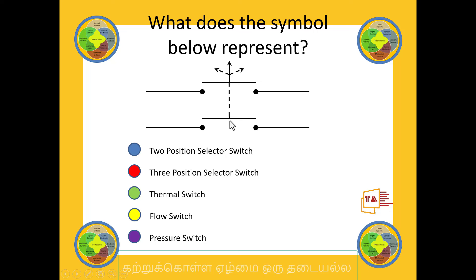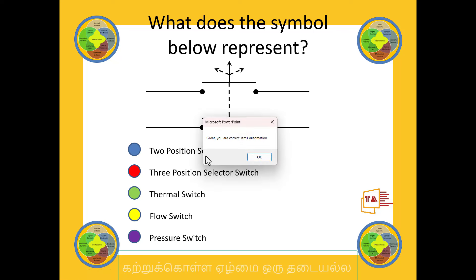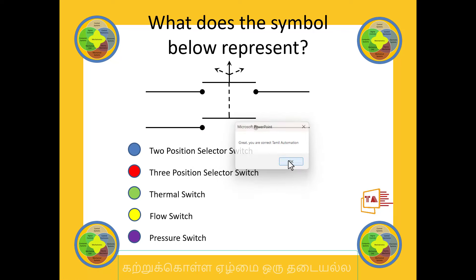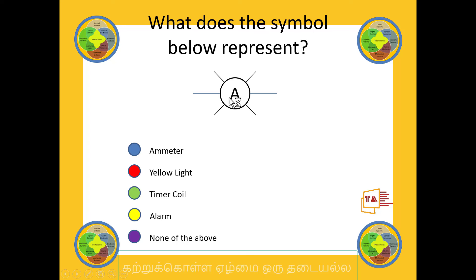If you see here, this symbol is represented as follows: this is one way, this is two way, this is three way. If you see here, this has three positions — this is center, and this is A. If you see here, this is A, which is a limit switch.